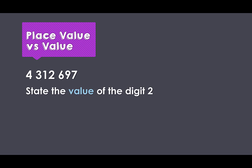Now let's look at these numbers again, but thinking about a digit's value. State the value of the two. Here we can see it is sitting in our thousands place value column, which means the digit two is worth two thousand.